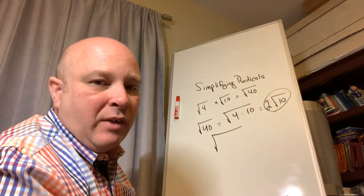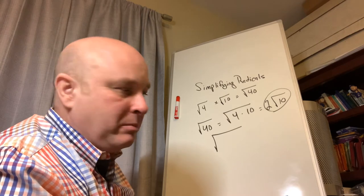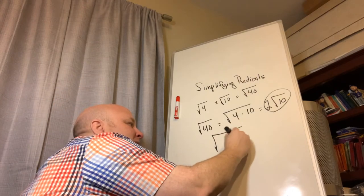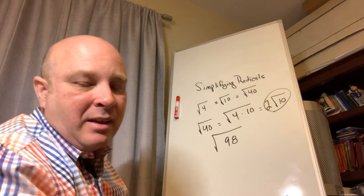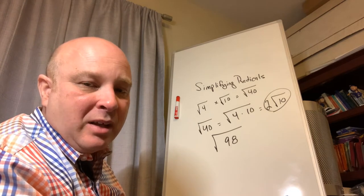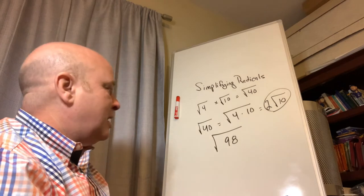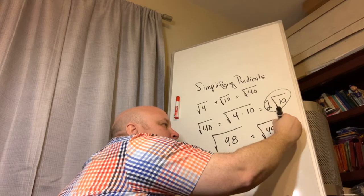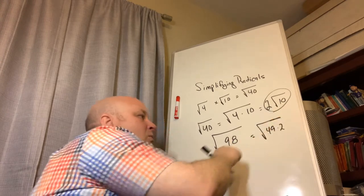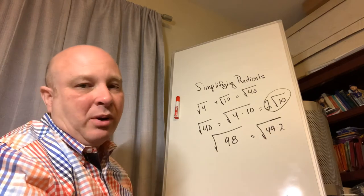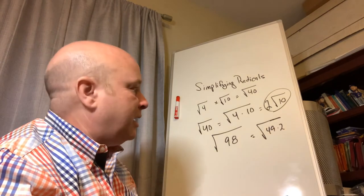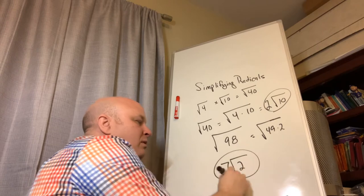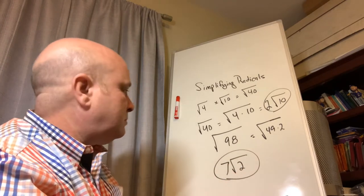When given a square root, look for a factor that is a perfect square. For example, given the square root of 98: 98 is not a perfect square itself, but 49 times 2 equals 98, and 49 is a perfect square because 7 times 7 is 49. So the square root of 98 equals 7 times the square root of 2.